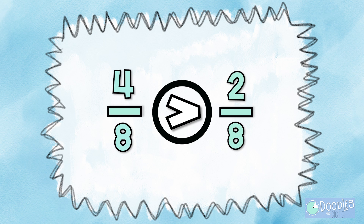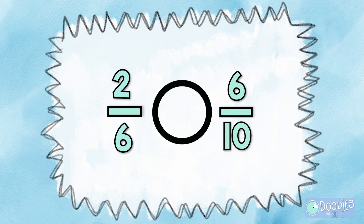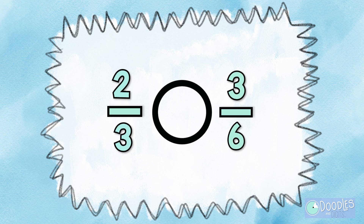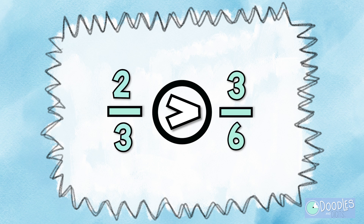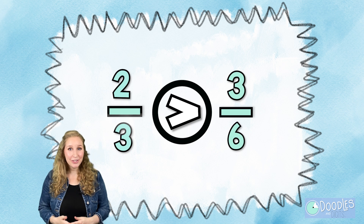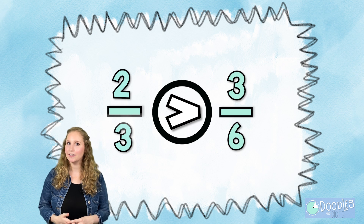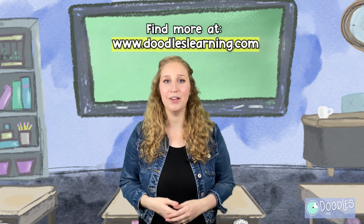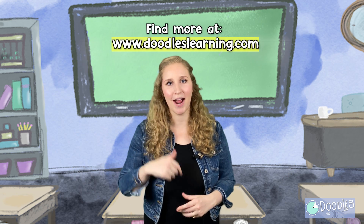Four-eighths or two-eighths? Four-eighths is greater than two-eighths. Two-sixths or six-tenths? Two-sixths is less than six-tenths. Two-thirds or three-sixths? Two-thirds is greater than three-sixths. How'd you do? Did you get them all correct? What strategy is your favorite? Check out our other videos on our channel — we put new videos out every month so make sure you're subscribed. Bye!